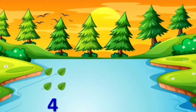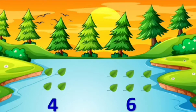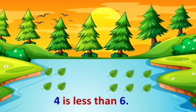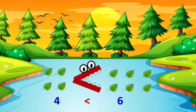Next example. There are four leaves, and on this side there are six leaves. So four is less than six. Now which side will the crocodile open its mouth? Towards the bigger number — towards the six. That means four is less than six.